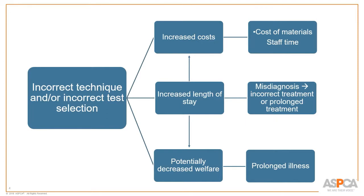We need to think about what happens if we make the wrong decision — if we choose the incorrect test or don't perform the technique correctly. A simple example is doing the wrong test. Say it's a busy day and you go out and draw blood samples from 10 dogs, planning on doing heartworm tests.